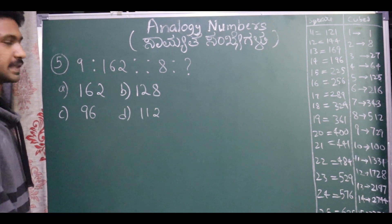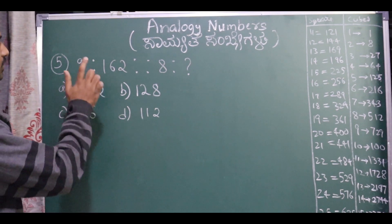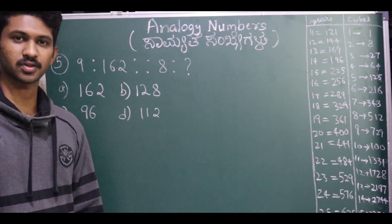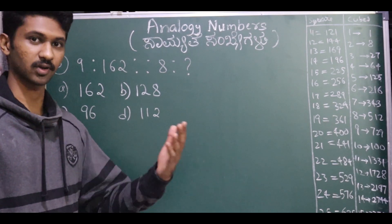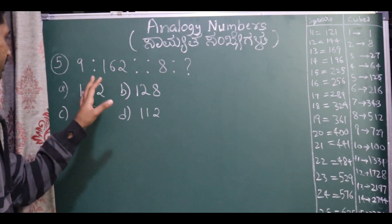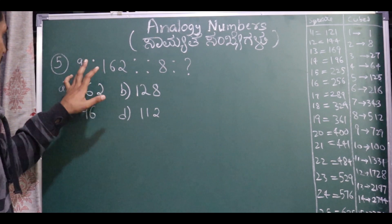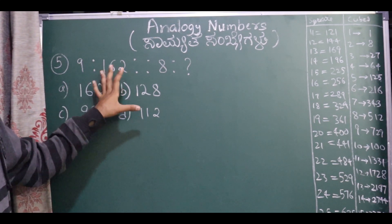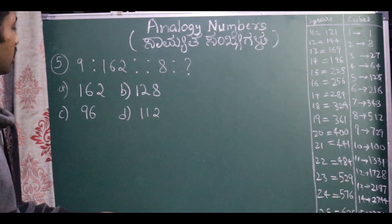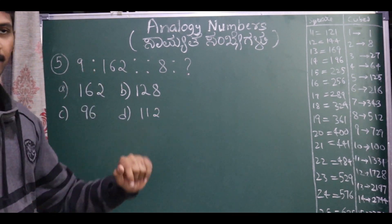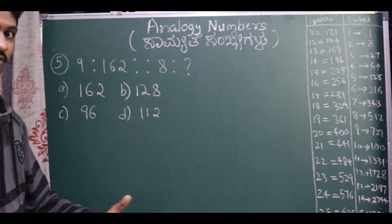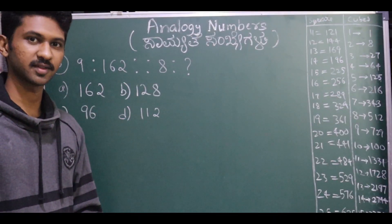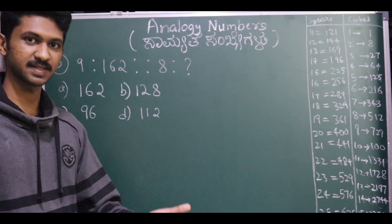Question number 5. Let's see the numbers: 9, 162, 8, and question mark. Let us follow the pattern. First, take square — 9 squared is 81, which is nowhere near 162. Let us try cube — 9 cubed is 729, so that's far away.